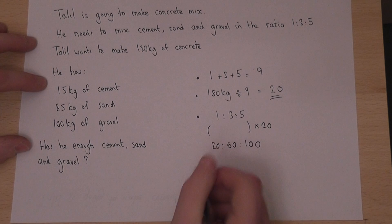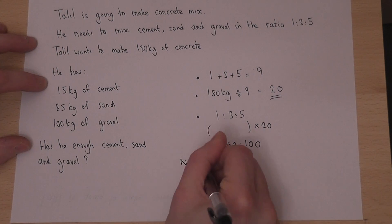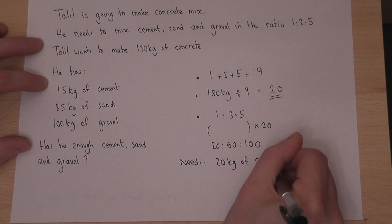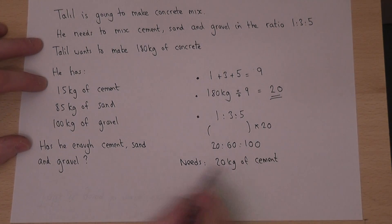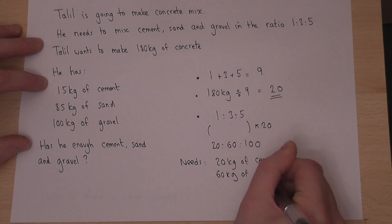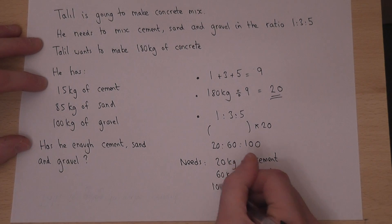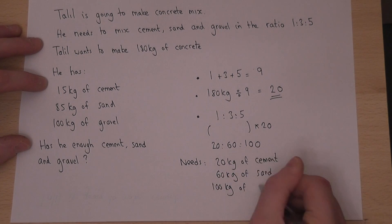Now this means he needs 20 kilograms of cement, so he has not got enough cement. He needs 60 kilograms of sand. Well, he's okay with sand. And he needs 100 kilograms of gravel, so he has enough gravel.